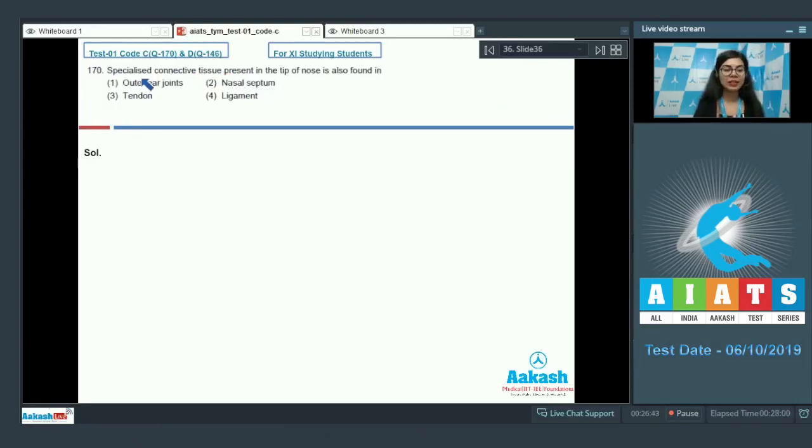Question 170: Specialized connective tissue present in the tip of nose is also found in outer ear joints, nasal septum, tendon, or ligaments. The question is reading specialized connective tissue. There are three types of specialized connective tissue mentioned in the NCERT.